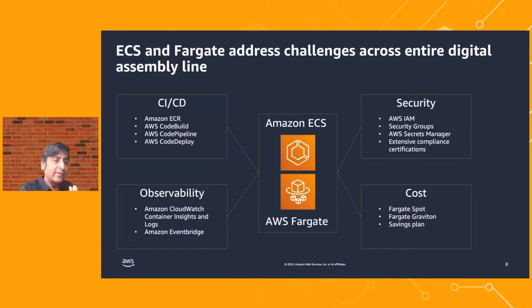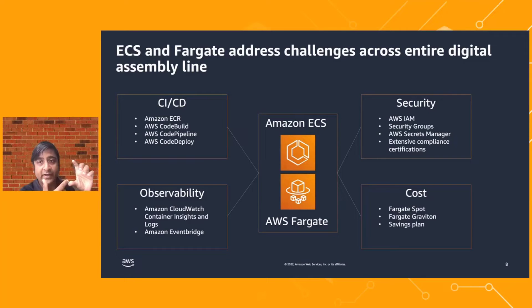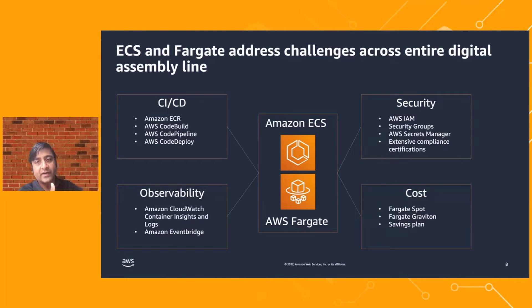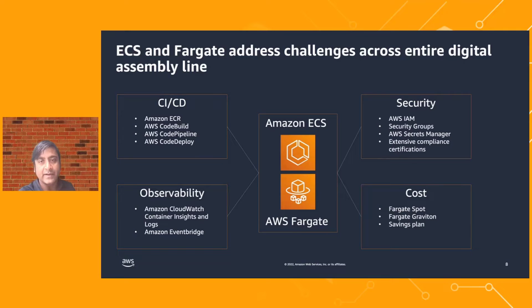In terms of security, IAM is a first-class citizen everywhere. If your task needs to talk to DynamoDB, another to RDS, and another to S3, you can give each task exactly the right privilege it needs and nothing more. These granular IAM roles are applied to the task. Each task also gets its own network interface in Fargate, so you can apply security groups to control what can talk to this task and where it can reach. For sensitive secrets, ECS has a native integration with Secrets Manager — it pulls secrets and makes them accessible to your containers without putting them in your Dockerfile. We also have extensive compliance certifications: HIPAA, PCI, FedRAMP, and various other levels.